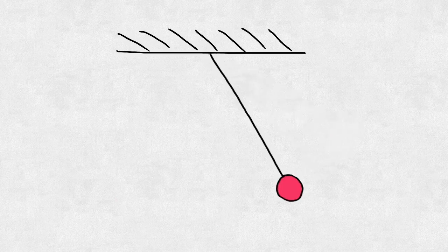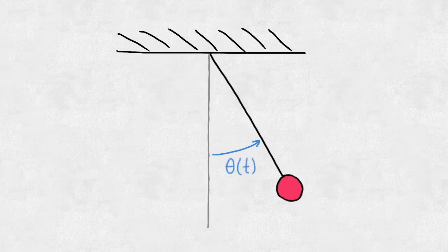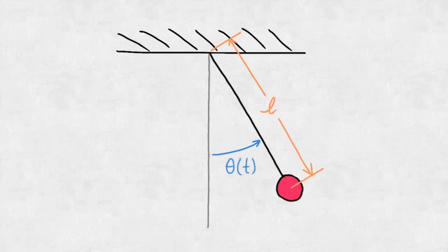But before we get ahead of ourselves, we'll choose to start with the classic approach and define a couple variables. For example, we can talk about the angle of the pendulum bob theta, the length of the string l, and the mass of the bob m.